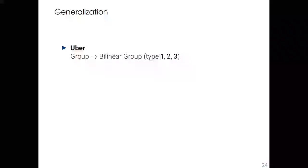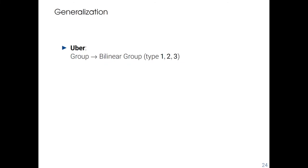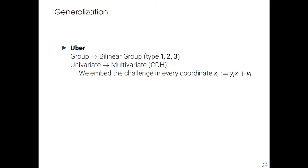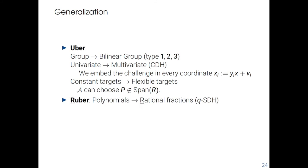We can easily adapt the proof for a bilinear context. By embedding the challenge in every coordinate in the multivariate case, exactly like in the CDH reduction, we also prove an analogous result for the multivariate case. Because we never use the fact that P is known at the beginning of the reduction, our proof works perfectly for the flexible target case. And because every rational fraction equation can be transformed into a polynomial equation, our proof can also be adapted for the rational fraction case.